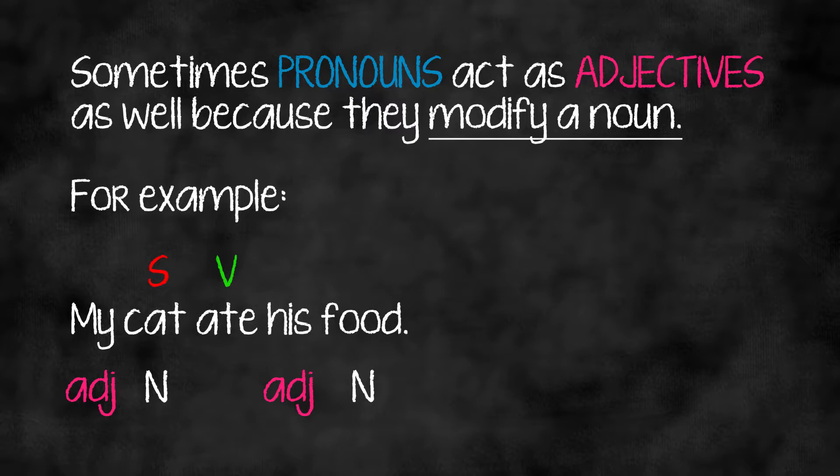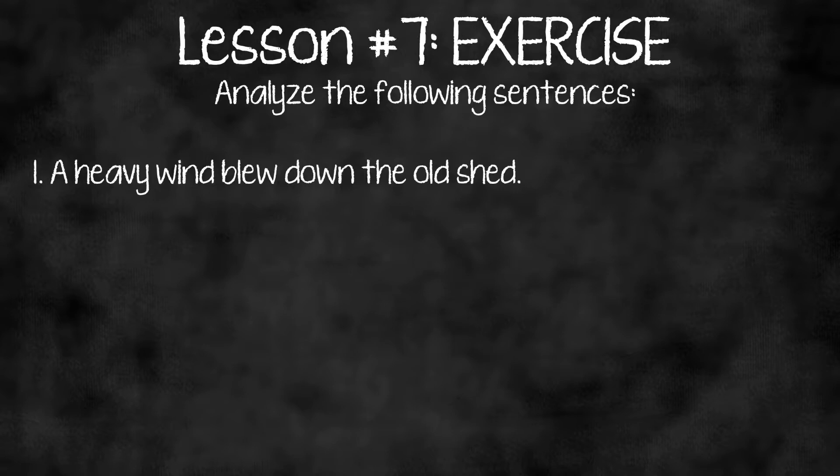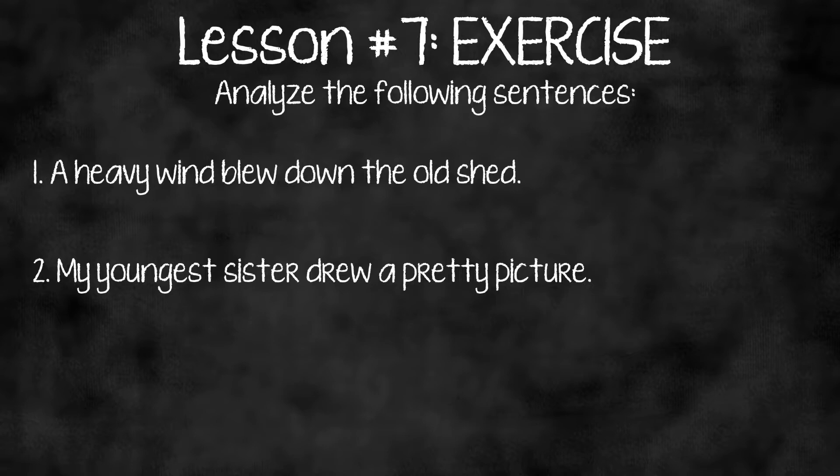'Food' is also a noun. It has a modifier — the pronoun 'his' is doing another job as well. It is giving us information about 'food': 'his food.' So it's acting as an adjective. Exercise: analyze the following sentences. 'A heavy wind blew down the old shed.' 'My youngest sister drew a pretty picture.' 'The wallet in my book bag held twenty dollars for my lunch.'